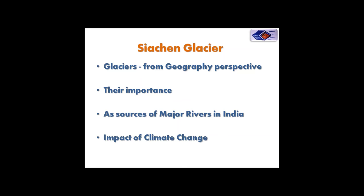A glacier forms when the accumulation of snow exceeds its melting and sublimation, a process that takes many years — sometimes centuries. Glaciers slowly flow due to stresses induced by their own weight, creating distinguishing landforms. They abrade rock and debris from their substrate to create features such as cirques and moraines. Glaciers form only on land, not on sea like sea ice.